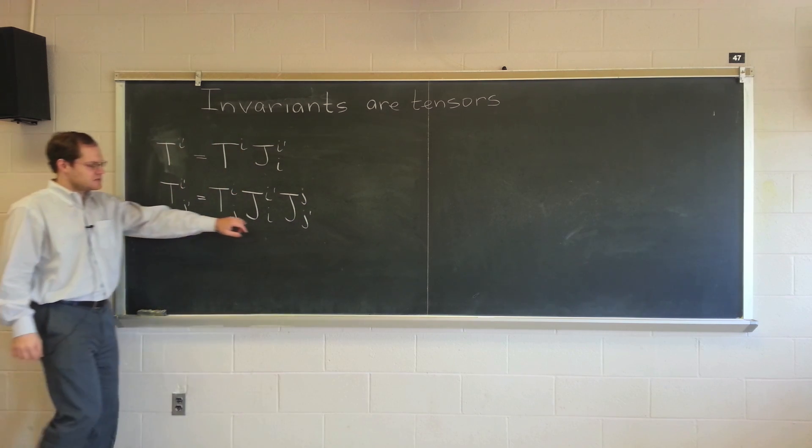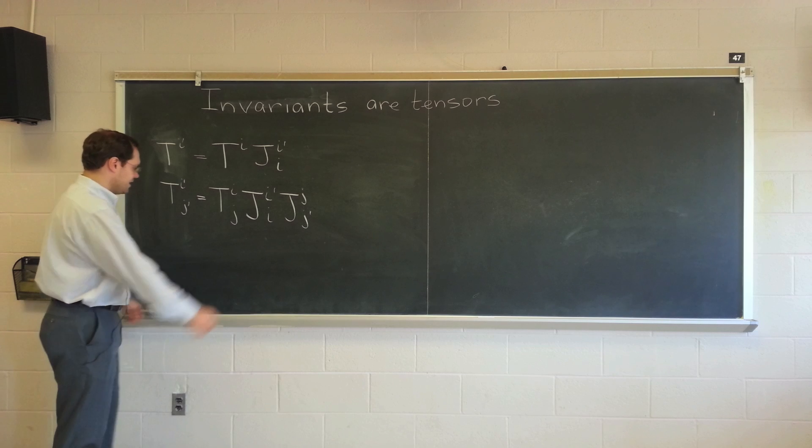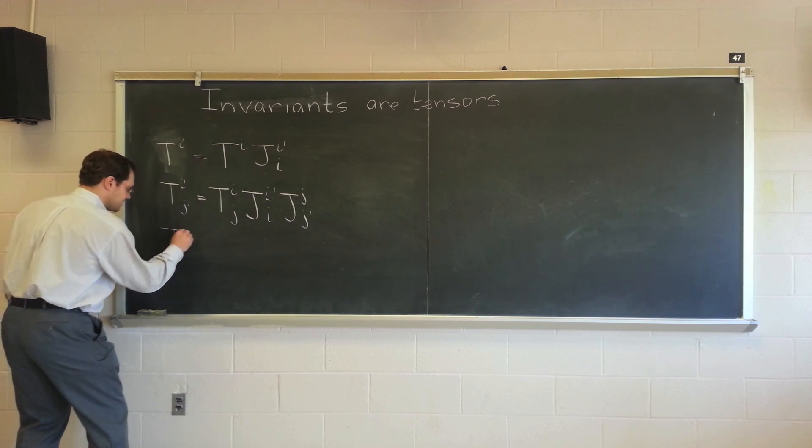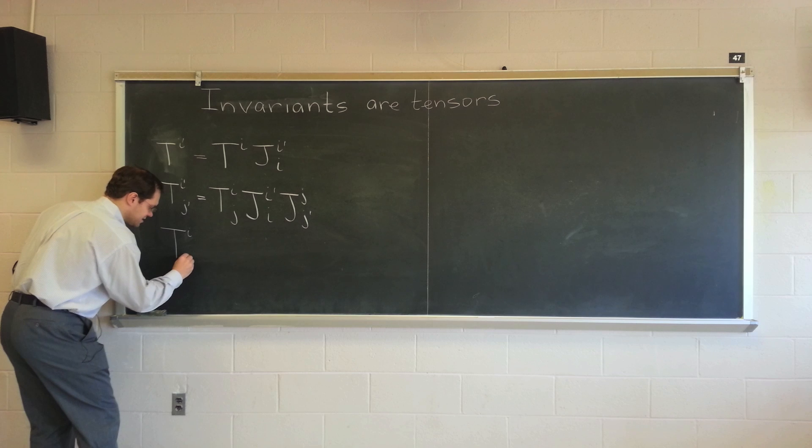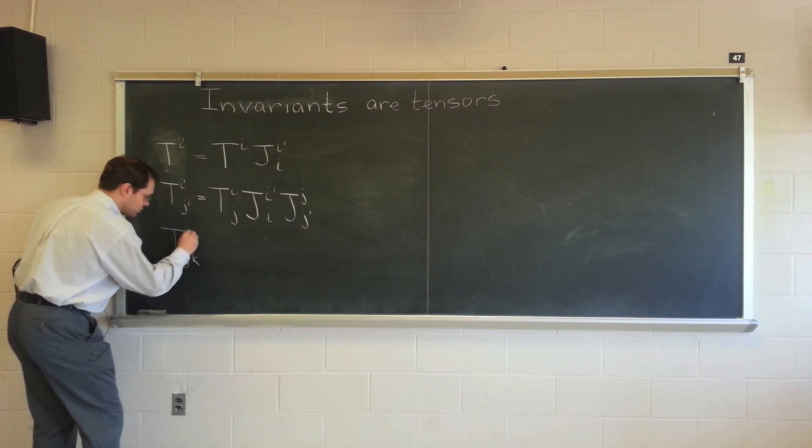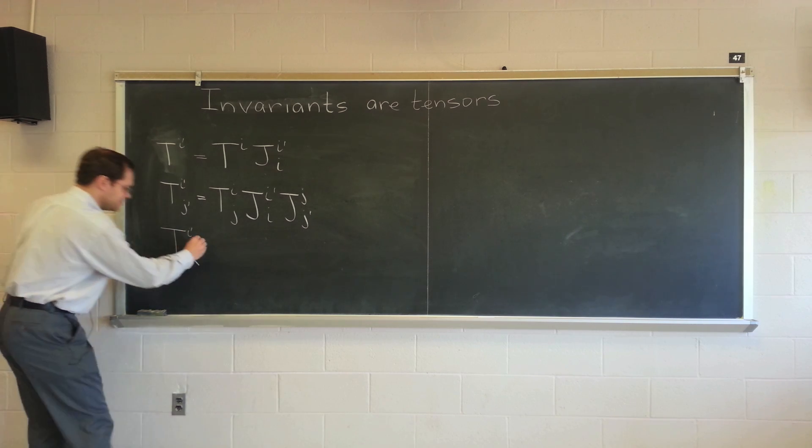So every index gets its own Jacobian. And some other variant, variant meaning is obtained in any coordinate system by its own, by the same rule consistently applied. You've seen many examples of these.